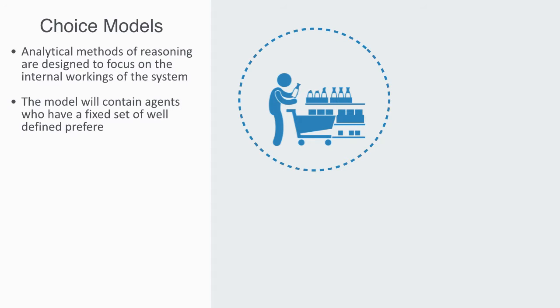Meaning, the model will contain agents who have a fixed set of well-defined preferences, rationality and complete information, with which to make autonomous decisions independent from any context. And if we want to come up with a closed form solution to this, these agents are going to have to have perfect information.